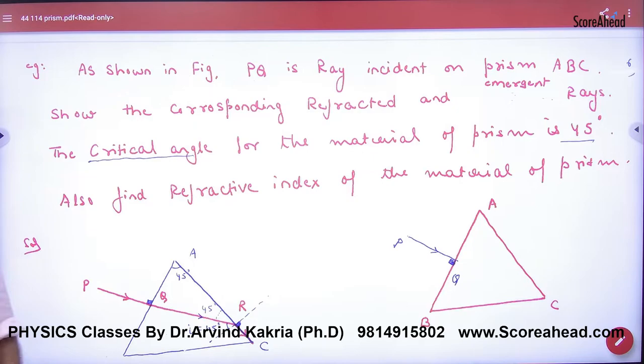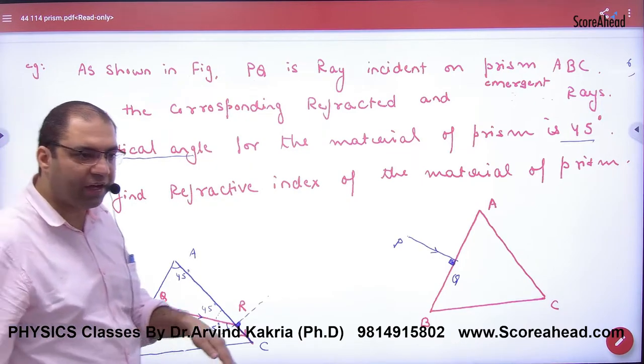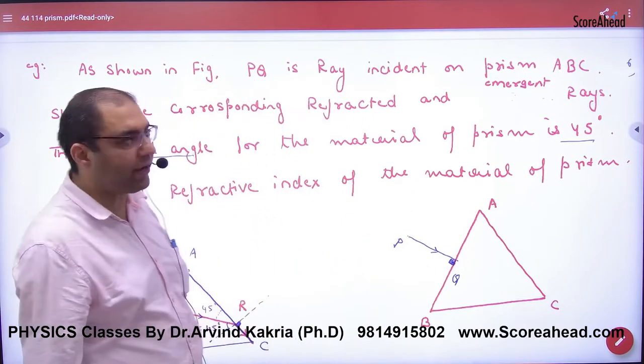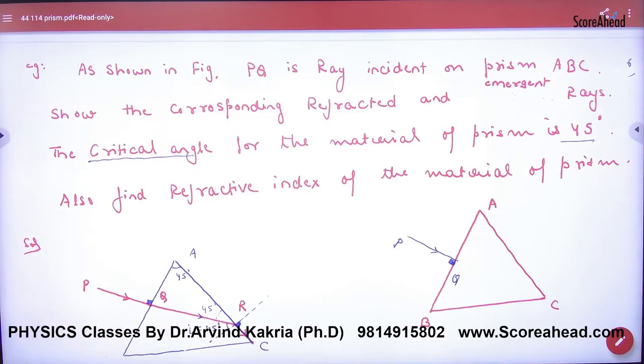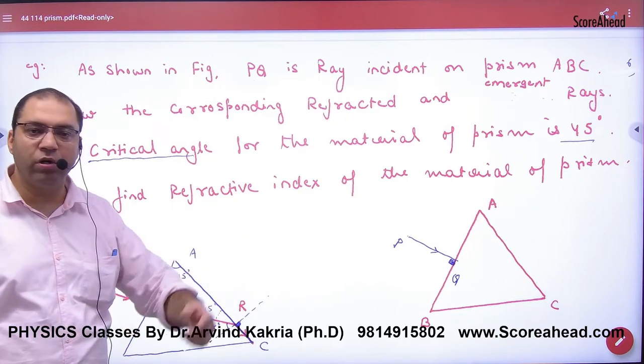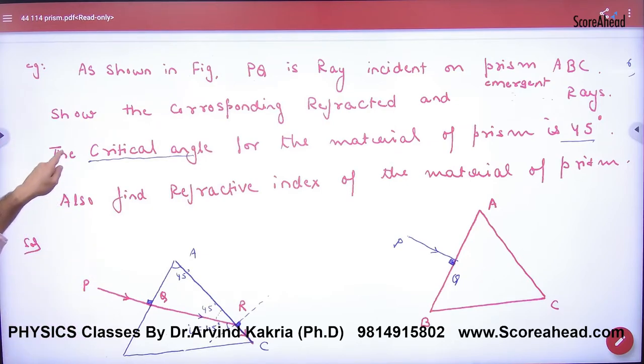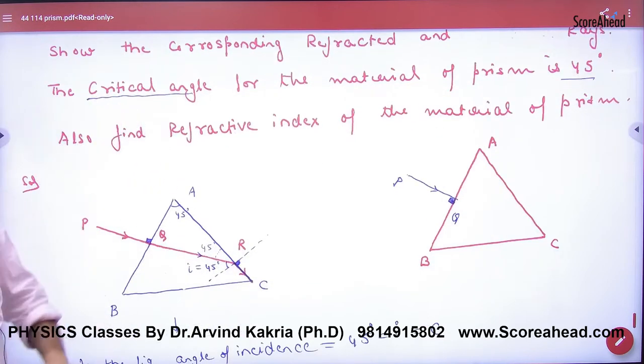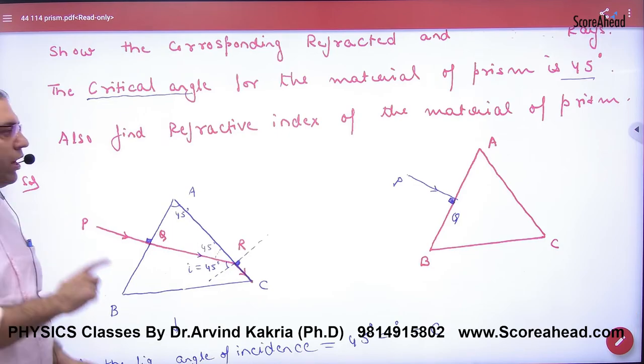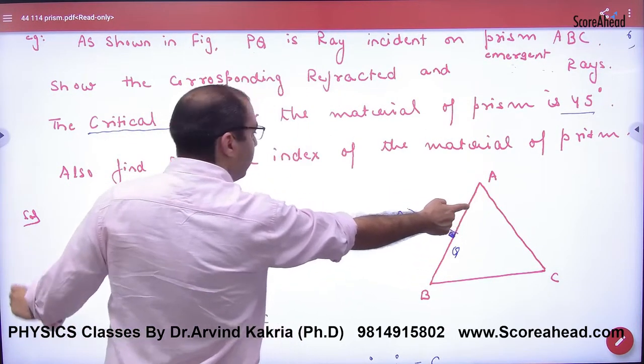As shown in the figure, PQ is incident on prism ABC at 90 degrees. This figure will be given. It will hit 90 degrees. Show that corresponding refracted and emergent trace - I made a diagram, let me show you. How will it come out of the prism? Critical angle of the material is 45 degrees. And the refractive index. It is given this angle of prism is 45 degrees.